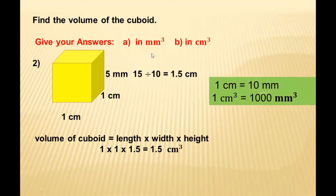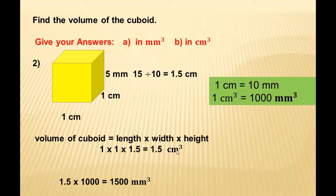Now let's convert 1.5 cm³ into mm³. Centimeter is the bigger unit and millimeter is the smaller unit. To go from a bigger unit to a smaller unit, we always multiply. Since 1 cm³ = 1000 mm³, we multiply 1.5 by 1000, giving a final answer of 1500 mm³.